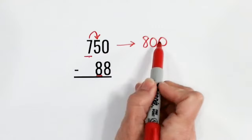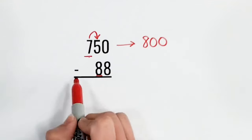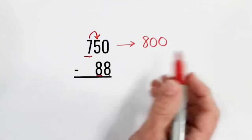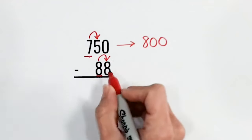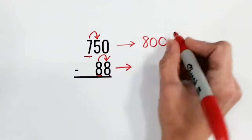Now we have 88. So we're going to look at the number next door, which is an 8. 8 is 5 or more. So we're going to round up. So 88 becomes 90.